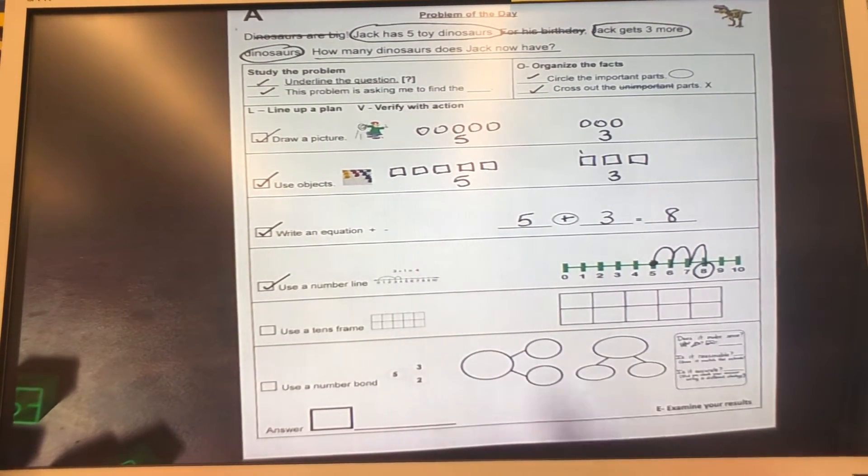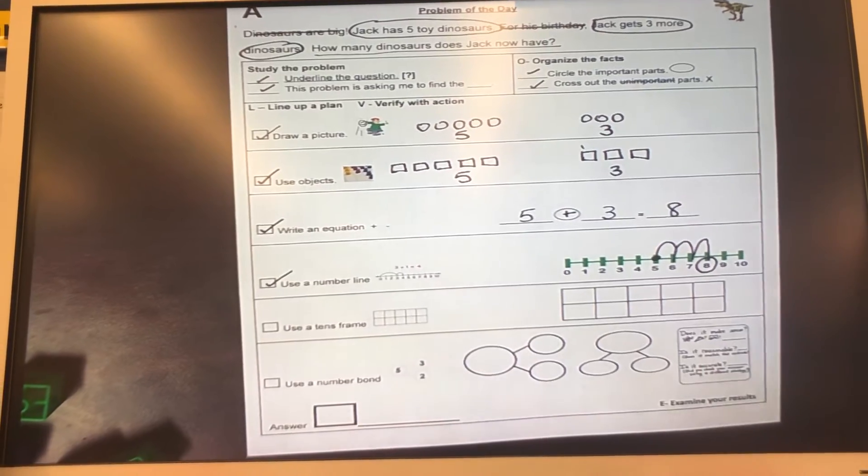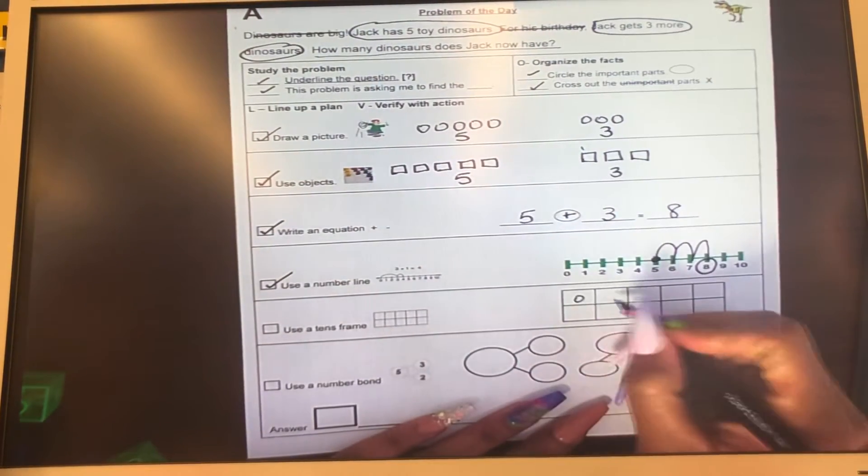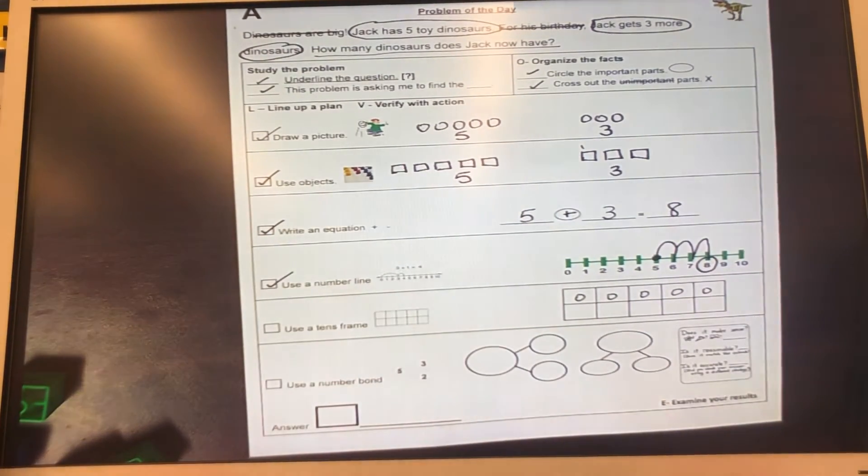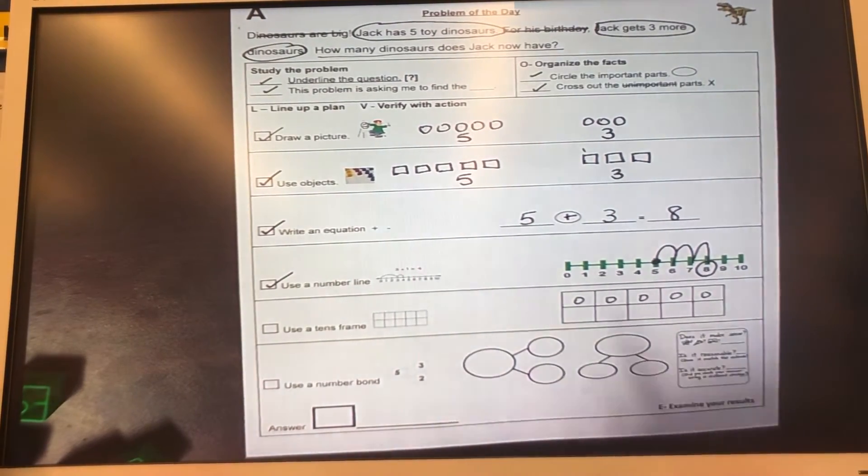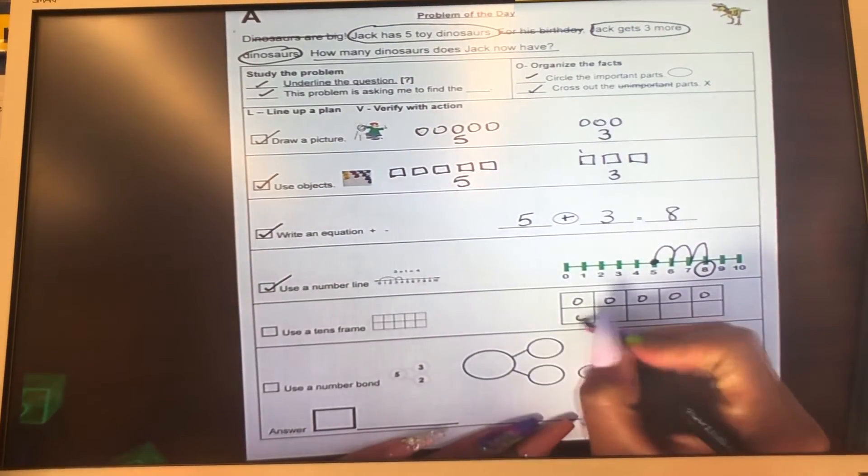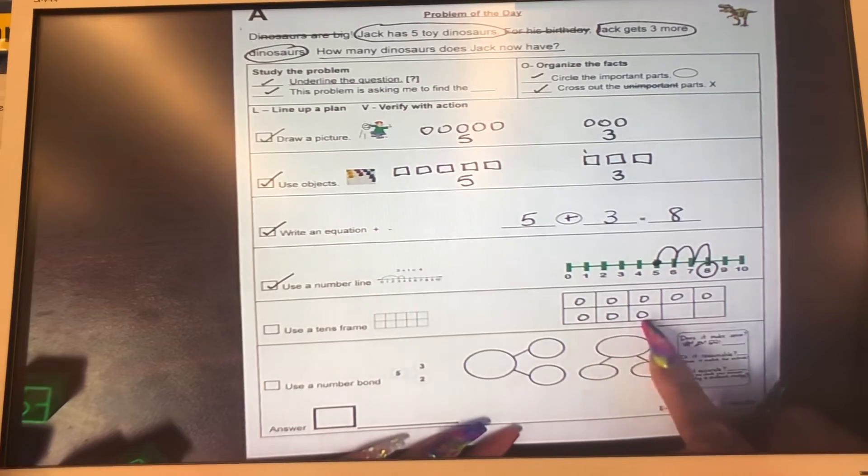Using our 10 frames. You guys have your lovely 10 frames in your packets. Let's do five toy dinosaurs. We have one, two, three, four, five. And we also know that Jack gets three more. Remember, you see, I'm constantly referring to our story. Jack gets three more. So we have five, six, seven, eight.